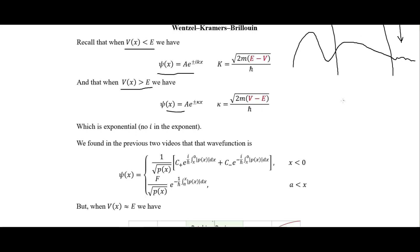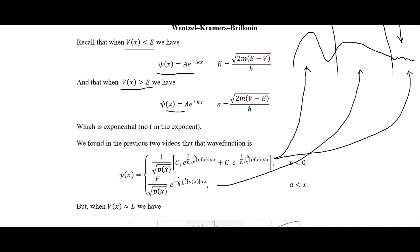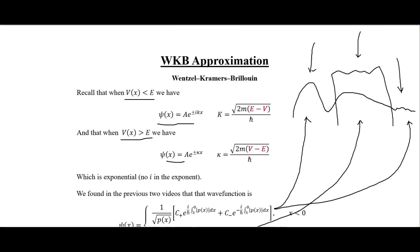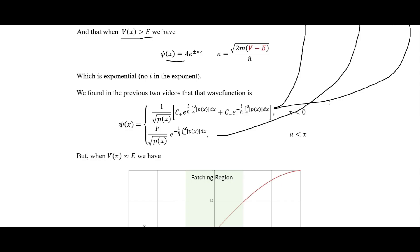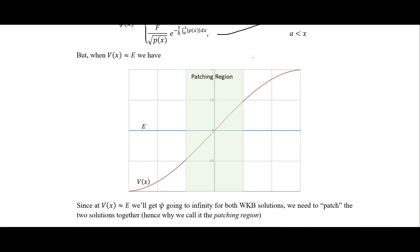We got two solutions: one that applies where the energy of the particle is greater than the potential, and one that applies where the potential energy is greater than the energy of the particle. Now we have to look at where the energy of the particle and the potential energy cross over each other — what we call the patching region — because this is where we have to patch the two solutions together.